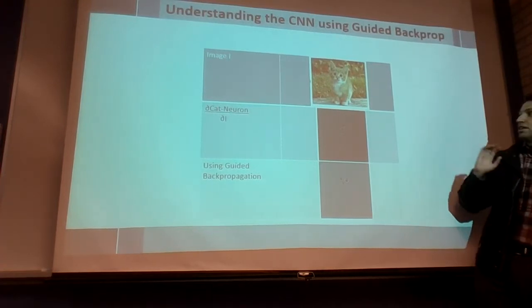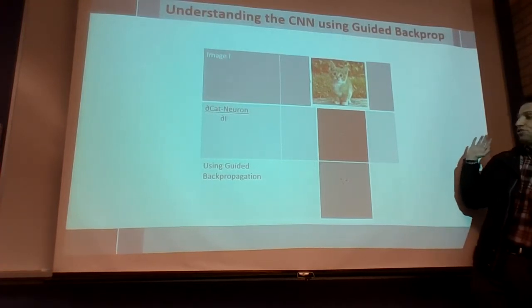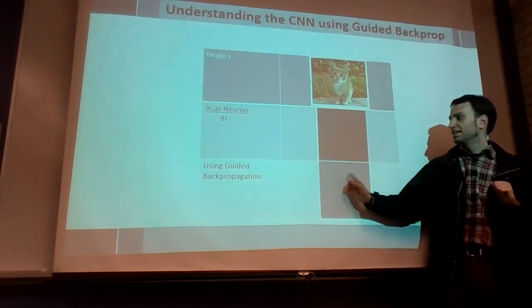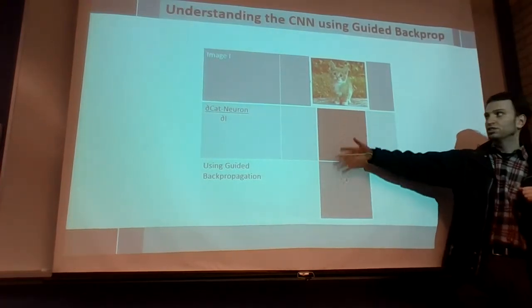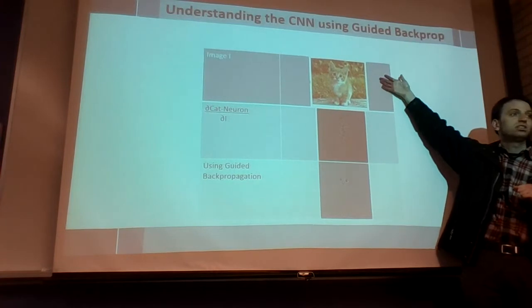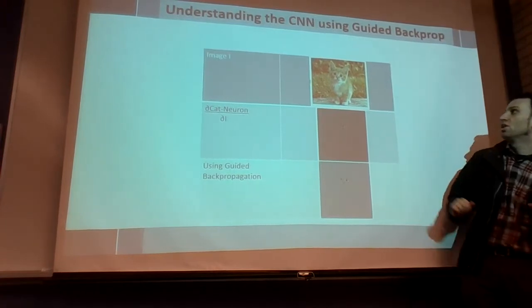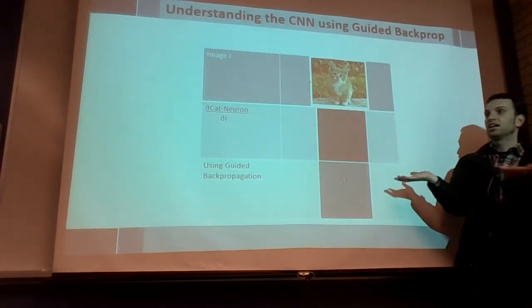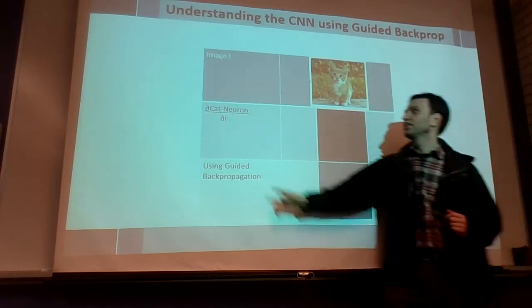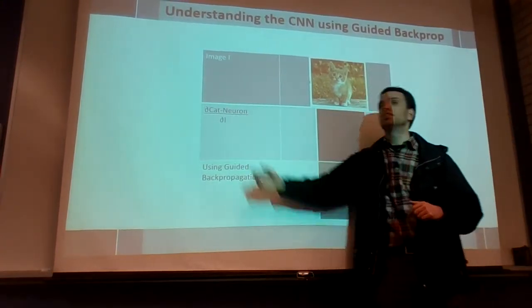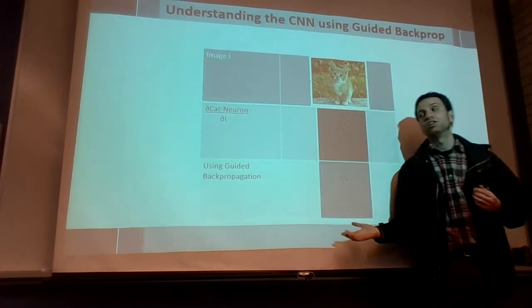So here's what guided backpropagation is, essentially, it's a way to visualize which pixels were important for a particular output of a network. So let's say that you have a network that does object classification, has one output called a cat neuron, that corresponds to there being a cat in the image.